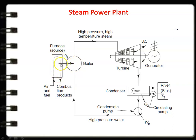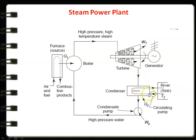Heat is given to the boiler from the furnace, where burning of the fuel takes place — this may be a liquid fuel or solid fuel. The hot gases are produced, and the heat is given to the boiler, which converts water into steam. The high-pressure, high-temperature steam from the boiler enters the steam turbine. In the steam turbine, we have multiple stages. The steam is expanded in the turbine, work is produced (Wt), and the steam leaves at low quality. The wet steam leaving the turbine goes to the condenser, where it is condensed using water from a river or lake, and the heat is rejected.